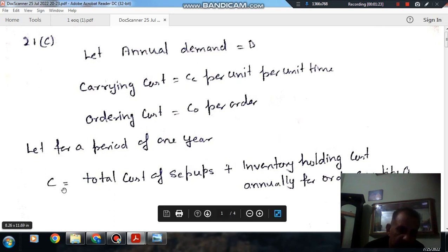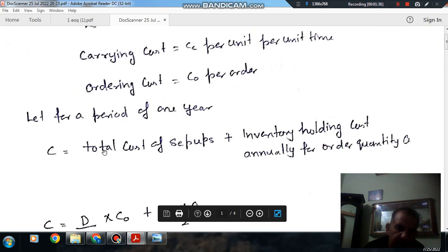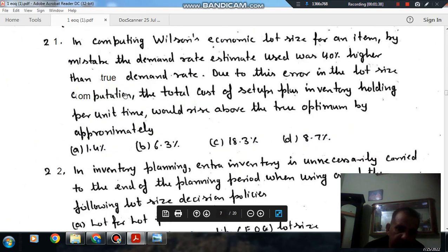So C represents the total cost of setup plus inventory holding cost annually for the order quantity Q. As it is given that due to this error the lot size, the total cost of setup plus inventory holding cost per unit time—we are taking time as one unit—and quantity as ordering quantity Q.